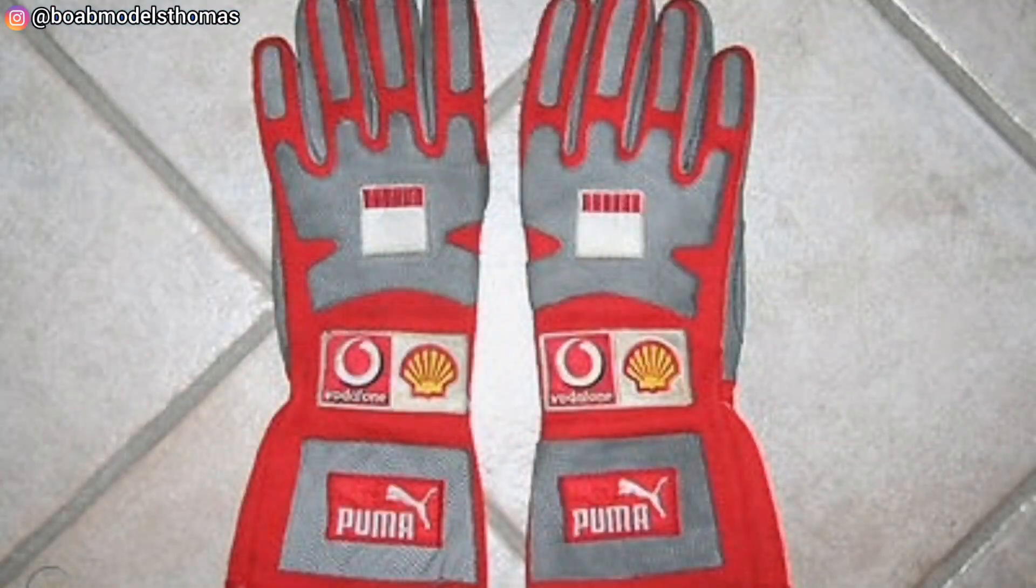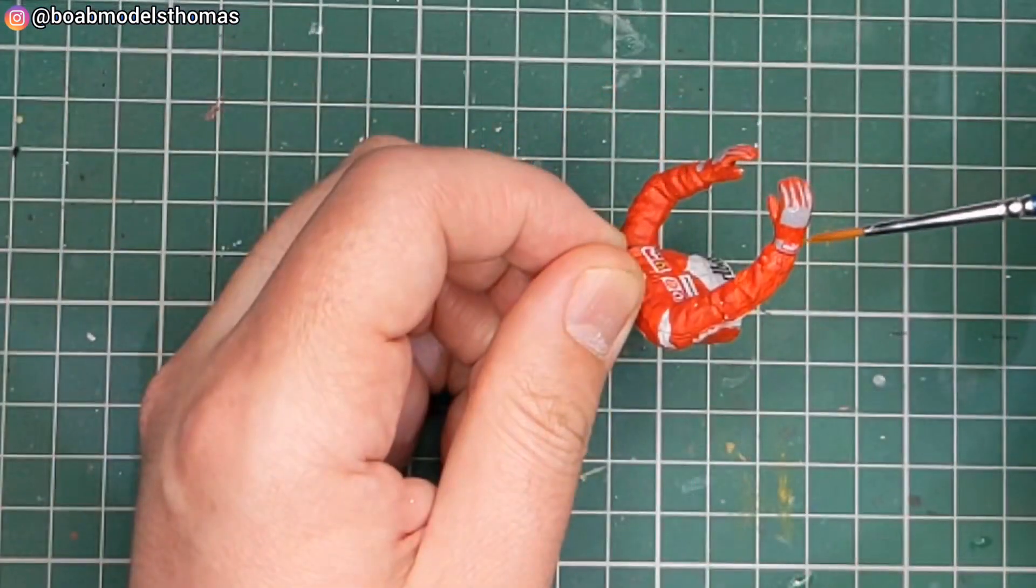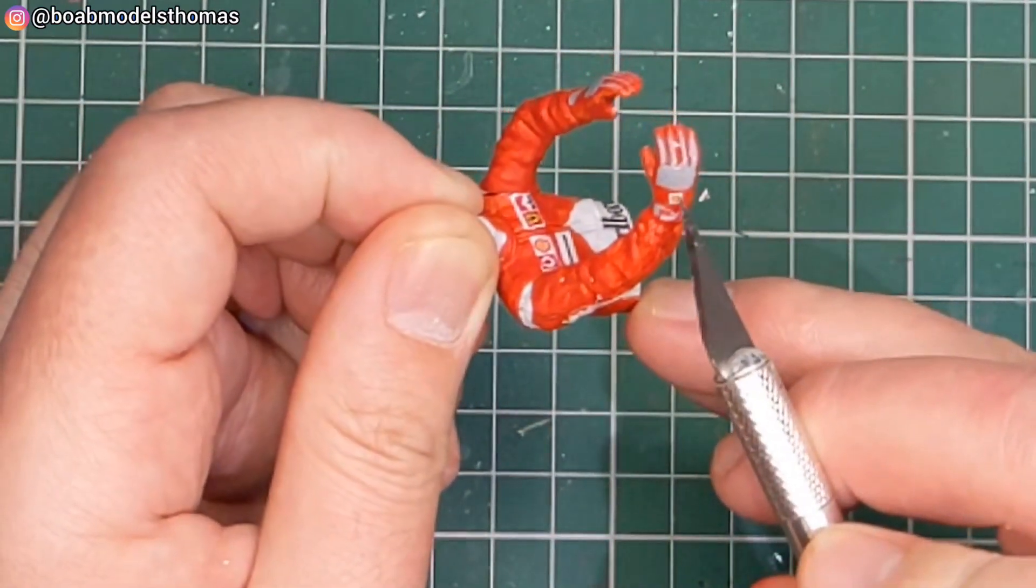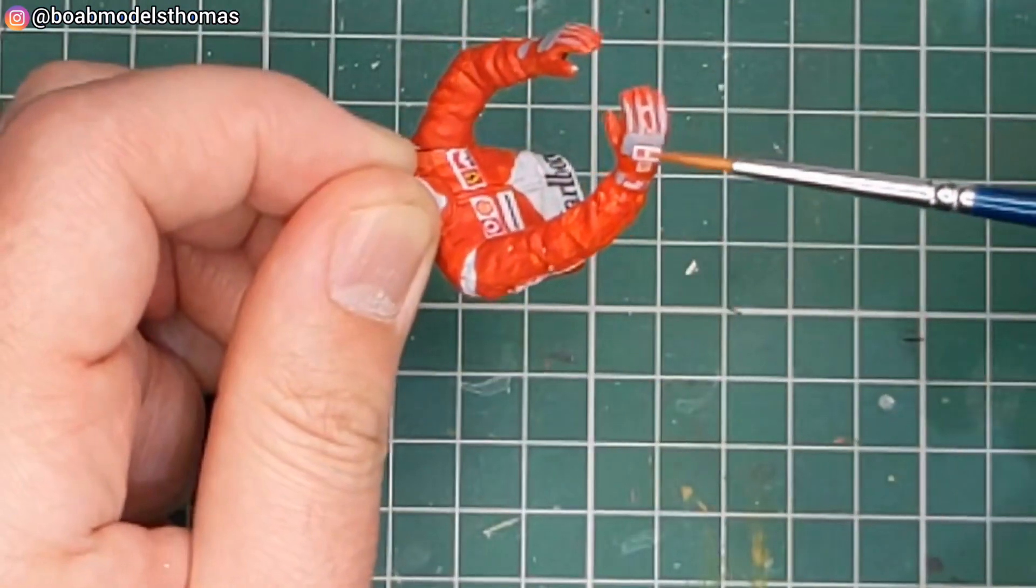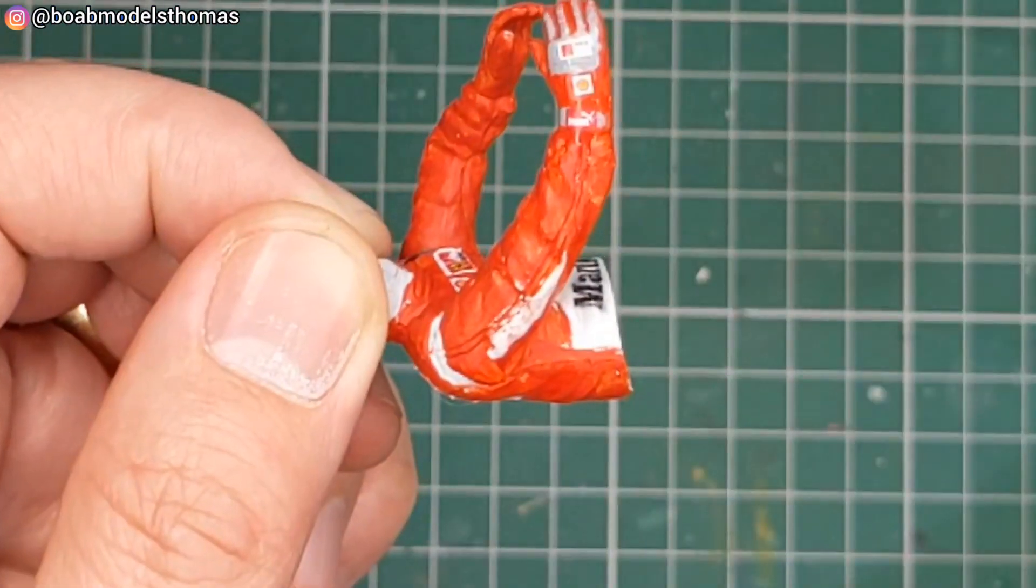And I looked at these examples of gloves from the time. I wasn't happy with the Vodafone decals that I printed at that scale. So I simply used the kit decal ones. They included a shell decal and also this little one on the hand. It's not correct but at that scale you can't really see the difference.